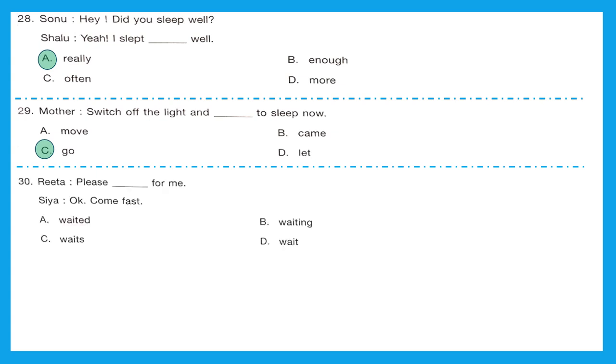Question 30, Rita: Please dash for me. Siya: Okay, come fast. Here is a request being made. Waited, waiting, waits or wait? Here again we are going to use the base form of verb, and the base form is option D, wait. Please wait for me.